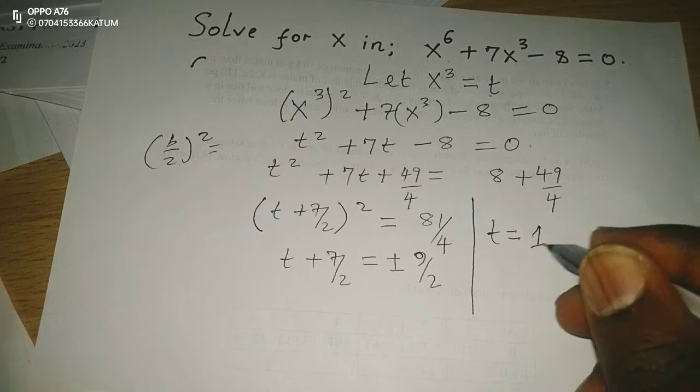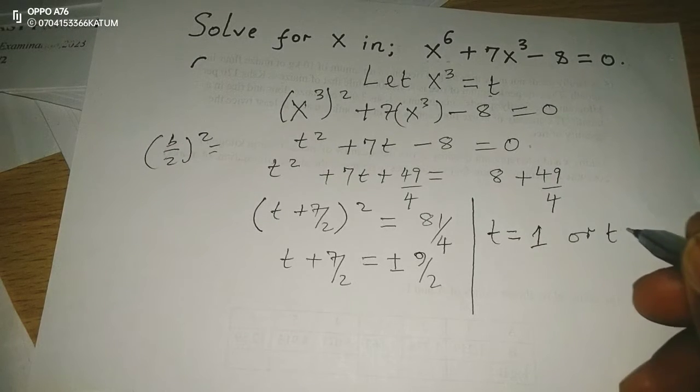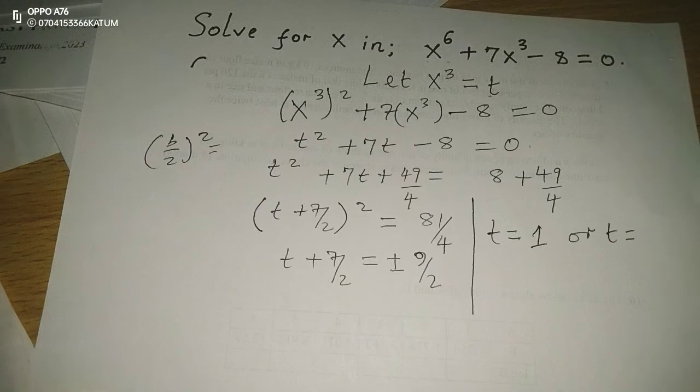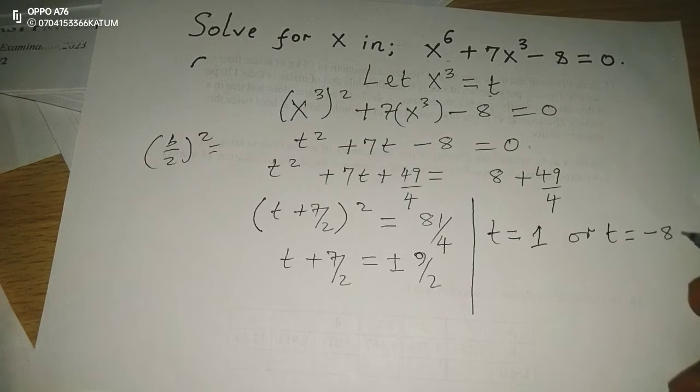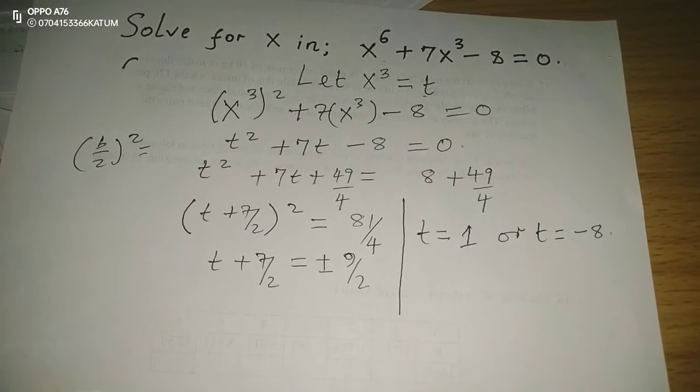The value of t is either going to be 1, or t is going to be negative 4.5 minus 3.5, and this becomes negative 8. Yeah, that becomes negative 8.